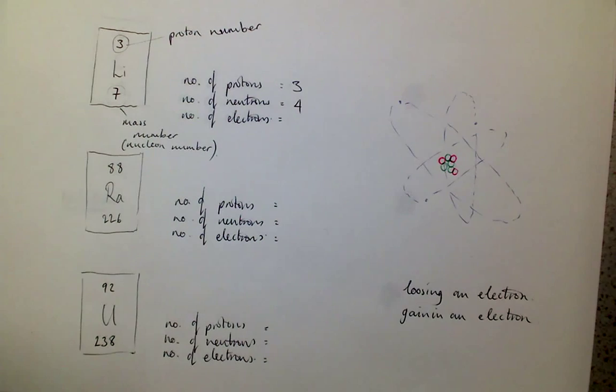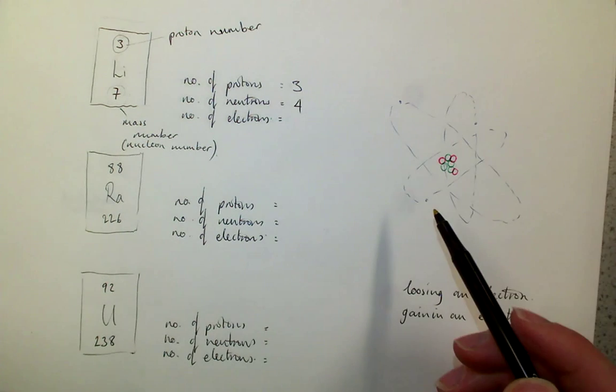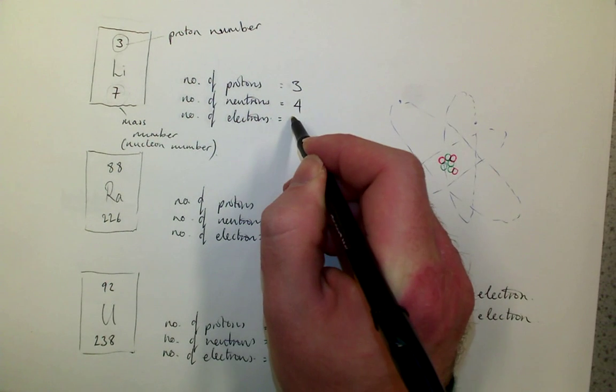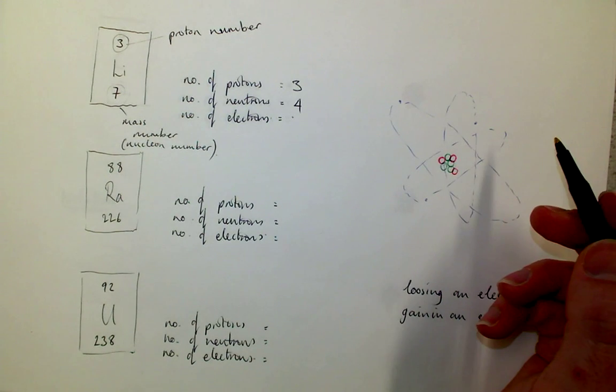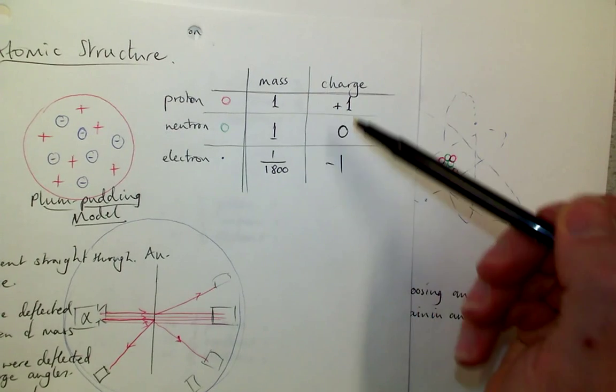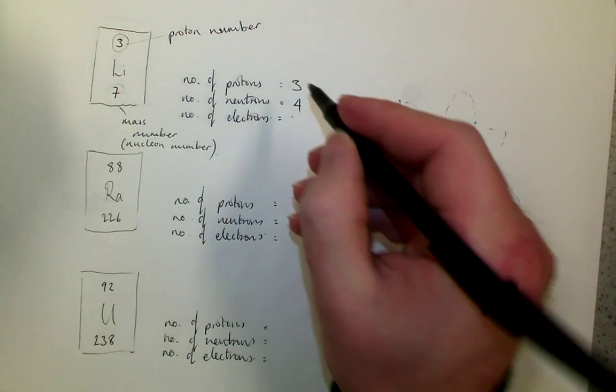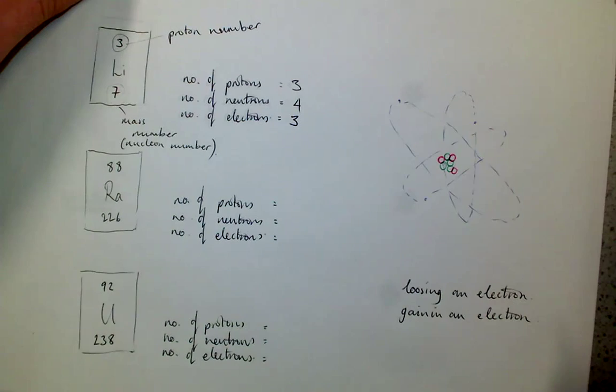So we call it the nucleon number. So if there are seven protons plus neutrons, well how many neutrons must there be? That's easy. Seven take away three is four. And when it exists in an atom with no charge, you can see that the charge must be equal. So the number of protons must equal the number of electrons. The neutrons don't play any part in the charge. So how many electrons has it got? Well, it's got three.